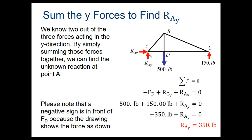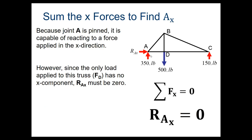The last reaction to find is RAX. Looking at all forces in the X direction, RAX is the only horizontal force — there are no other X-direction forces here. So if the sum of X forces equals zero, RAX must equal zero. This happens very commonly with bridge truss problems unless there's an external horizontal force or an angled load with an X component.